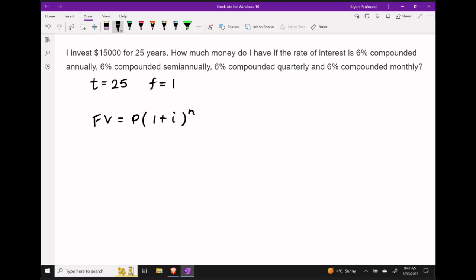We're going to use our future value formula, and we also want to make note in this first case that since we are compounding annually, our frequency number is 1, and since we're investing for 25 years, we know that t is equal to 25.